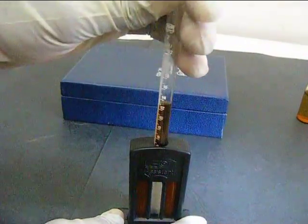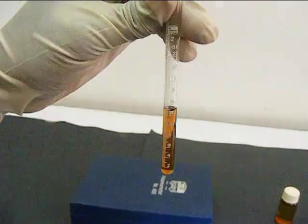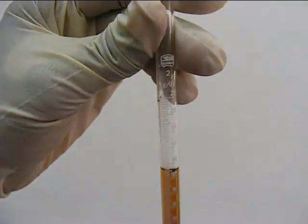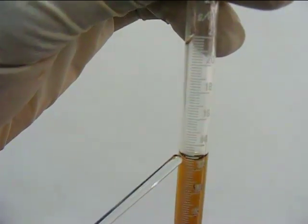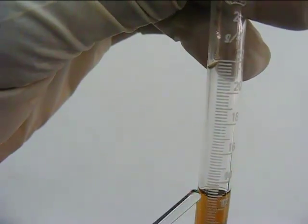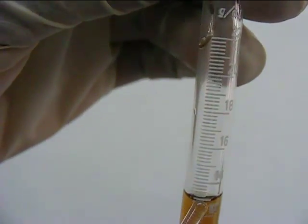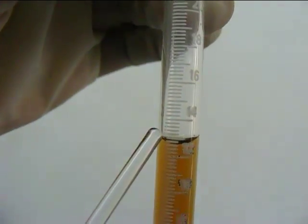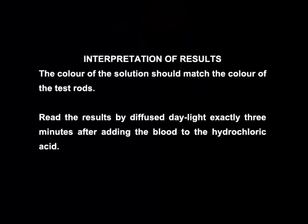The hemoglobin concentration is then read on the graduated glass tube. Interpretation of results: The color of the solution should match the color of the test rods. Read the results by diffused daylight exactly 3 minutes after adding the blood to the hydrochloric acid.